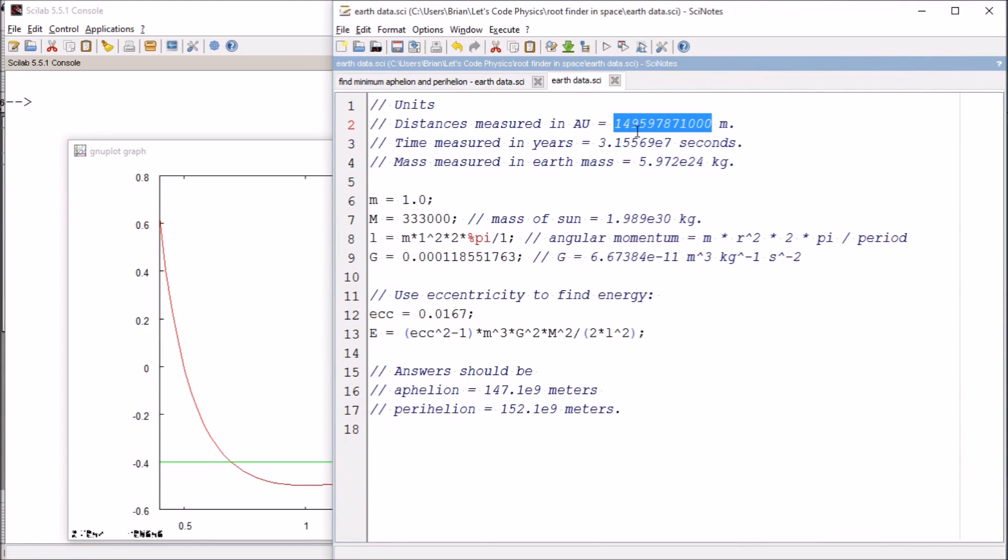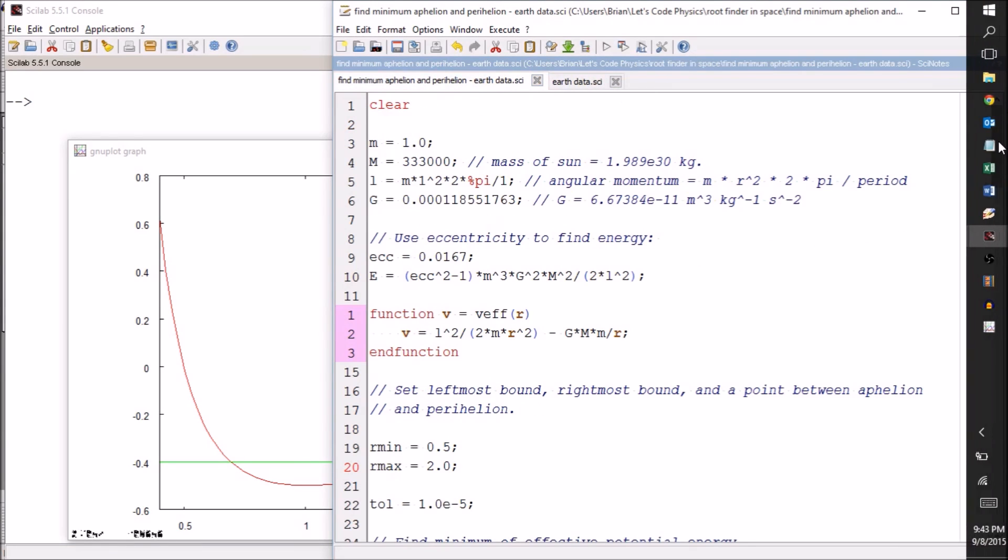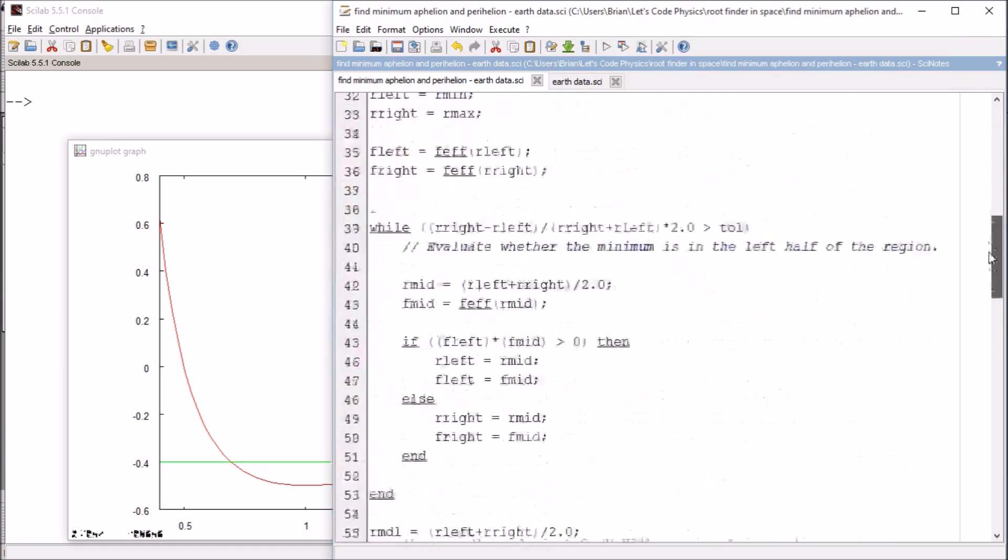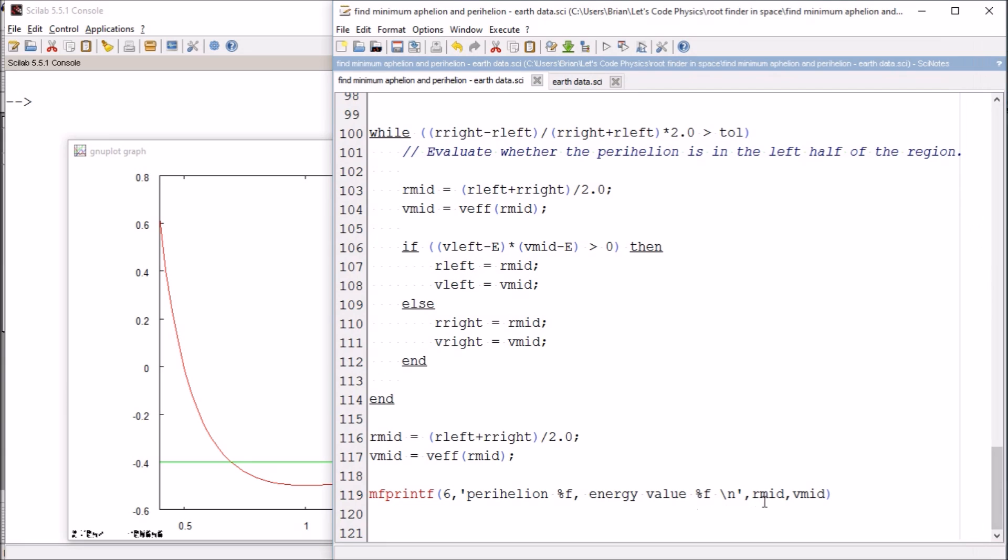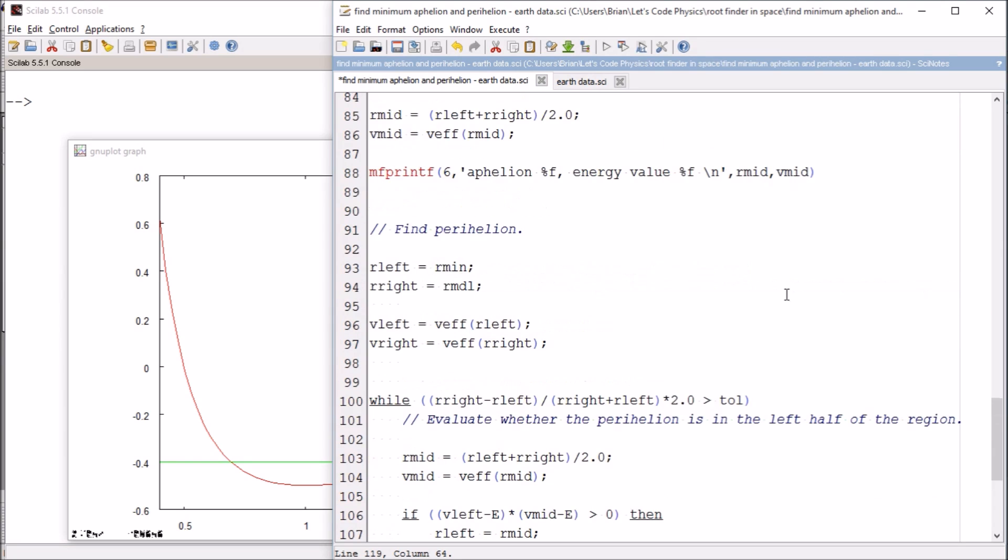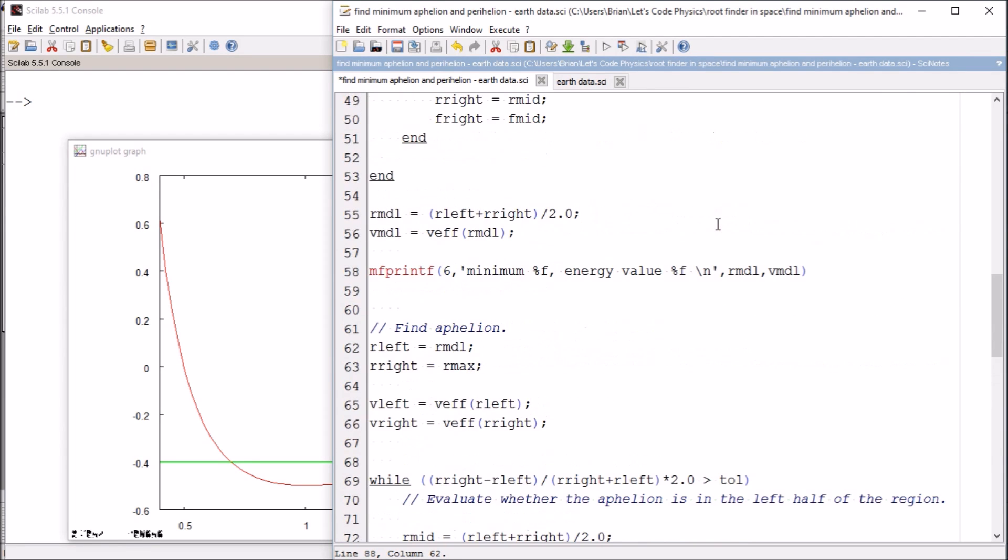So we've got our values here. We've got our energy as promised. Let's convert our answers into meters down below here. So let's see here. So perihelion, let's take the r there and multiply it by this. Let's take our r. Here's our aphelion. Let's take our rmid and multiply it by this.